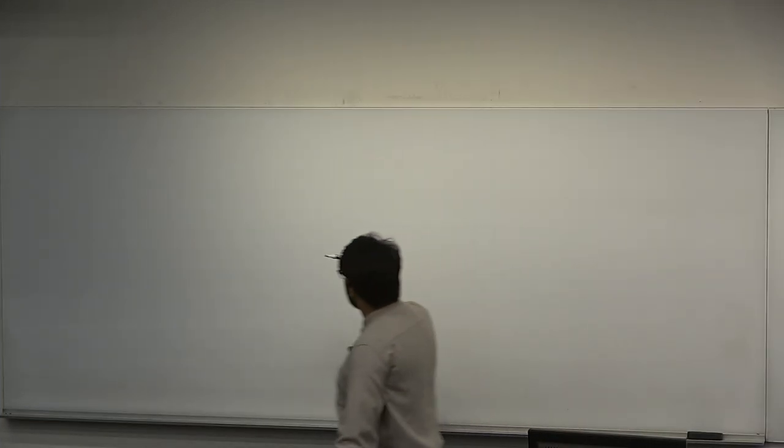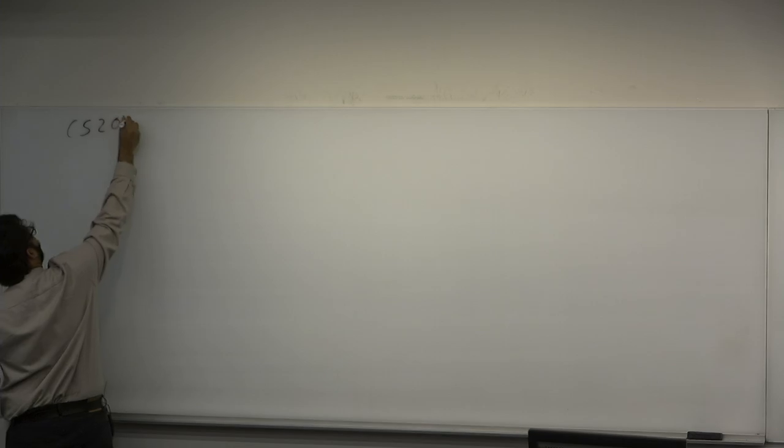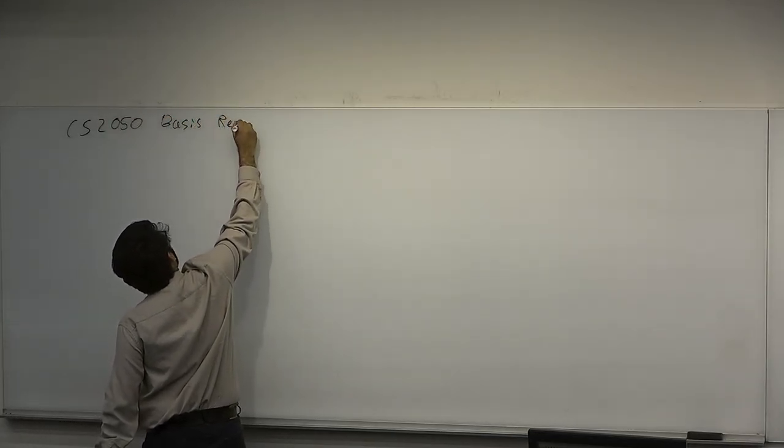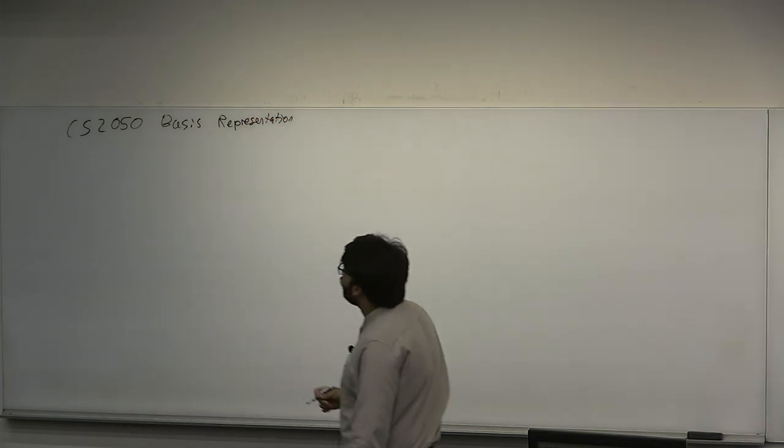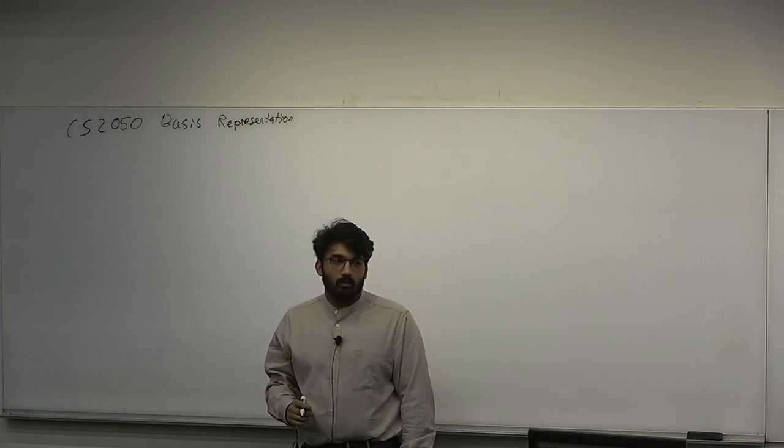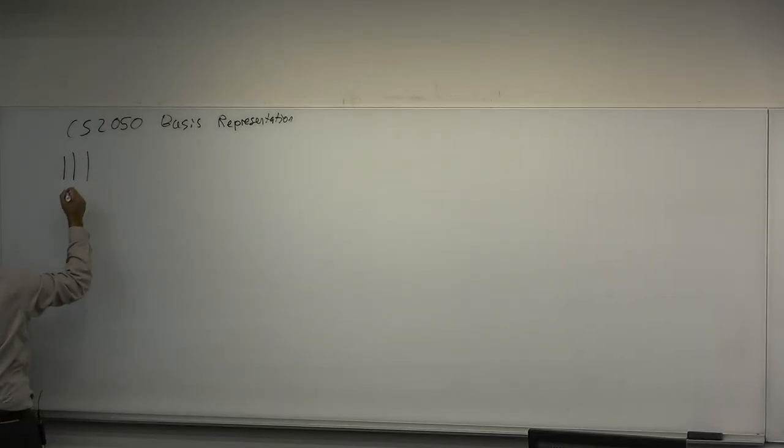All right, welcome to CS2050. This is a really quick mini-lecture on basis representation. Let's see, long ago there was a caveman, and he knew how to count, but he can't count that high. Every time he wants to count something, he puts it in a pile. So he has a pile of sticks. That's like three things, that's four things, five things. He puts five things in a pile, he represents that with five distinct items, because five items can be represented with five things.